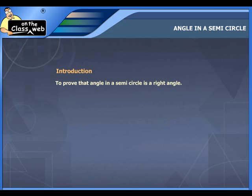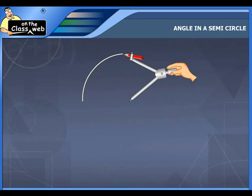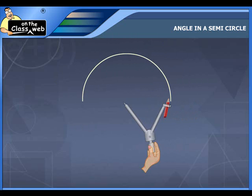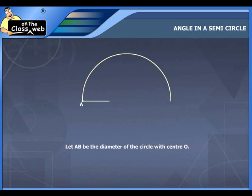Angle in a semi-circle. Let us see how to prove that angle in a semi-circle is a right angle. Consider a semi-circle. Let AB be the diameter of the semi-circle with center O.